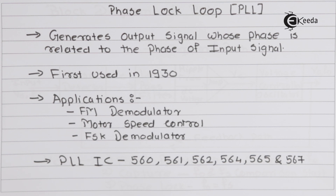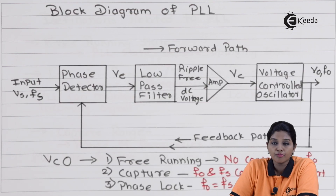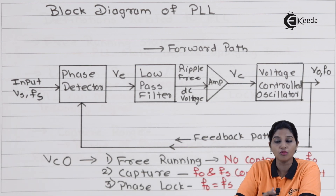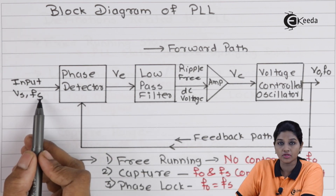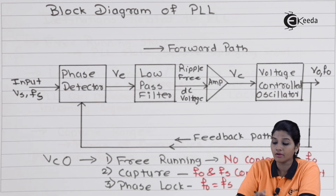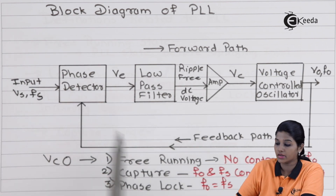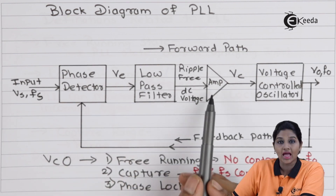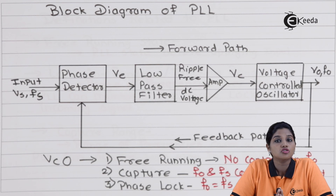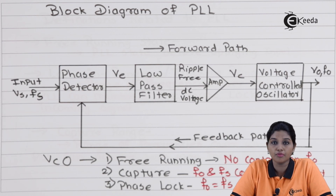Now let's understand the principle of operation of PLL, or we can say the block diagram of PLL. The block diagram of PLL basically consists of an input signal having voltage VS and frequency FS. The various blocks present in the phase lock loop are: phase detector or comparator, low pass filter, amplifier, and voltage control oscillator.